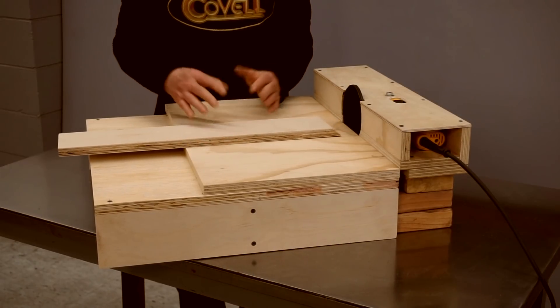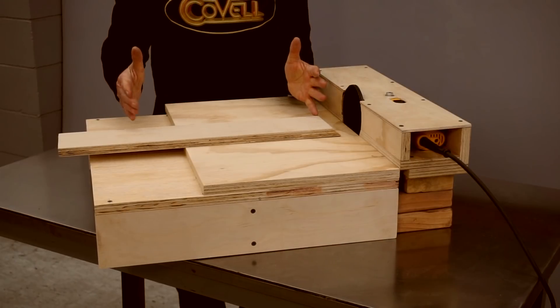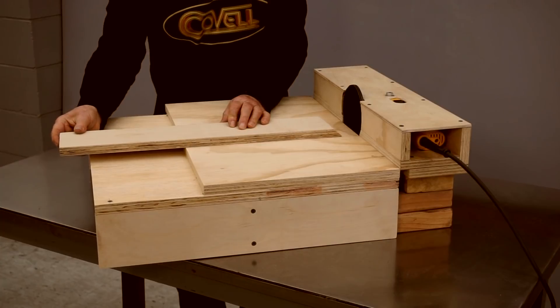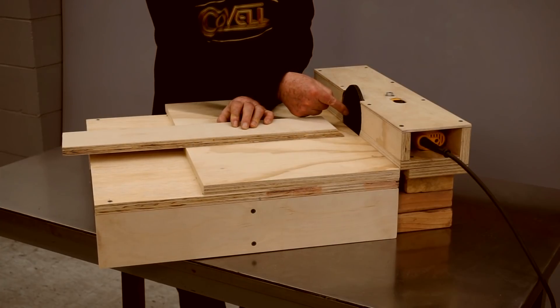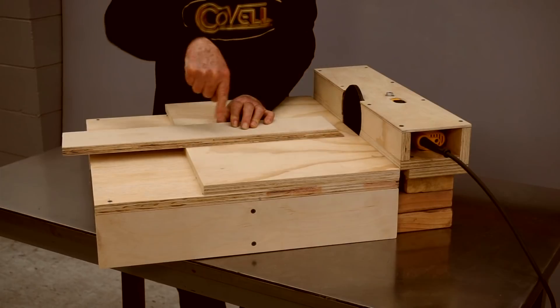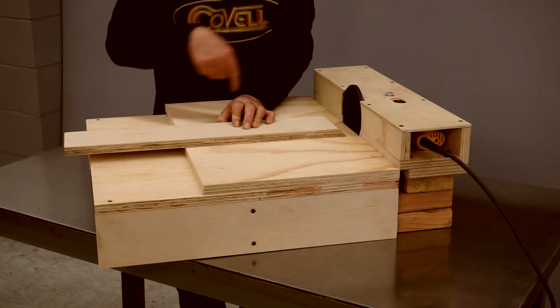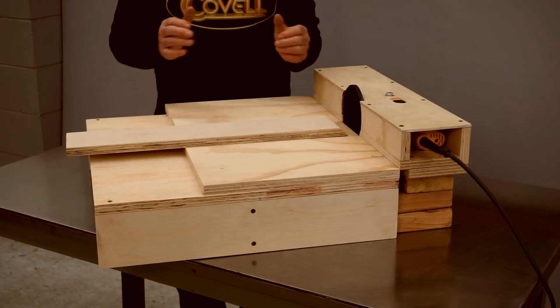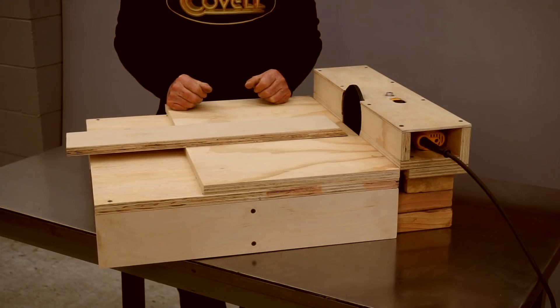And the way this works is when I'm creating a disc, the disc will fasten to this slider. And then I can move the slider up until the edge of the disc touches the sanding disc, rotate the disc, move the slider, rotate the disc, move the slider. And this way I can sneak up on the precise diameter I'm trying to achieve.